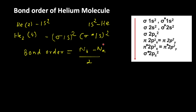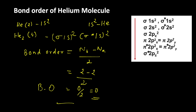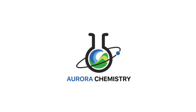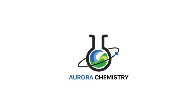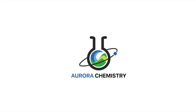So we can now calculate: (2 minus 2) divided by 2, which gives 0 divided by 2, equal to 0. The bond order of the helium molecule is 0. Because of that, the helium molecule does not exist.